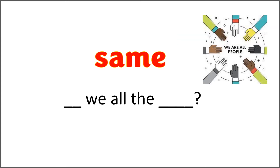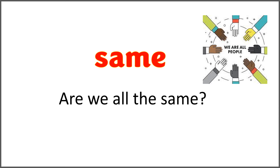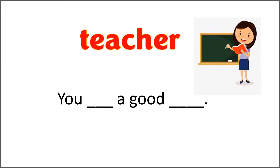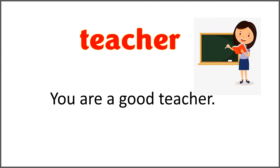The given word is 'same,' and the sentence is 'blank we all the blank?' Use the word 'same' with 'are' to complete the sentence. Are we all the same? What do you think? We are all people. The given word is 'teacher' and the sentence is 'you blank a good blank.' Use the word 'teacher' with 'are' to complete the sentence. You are a good teacher. Really?